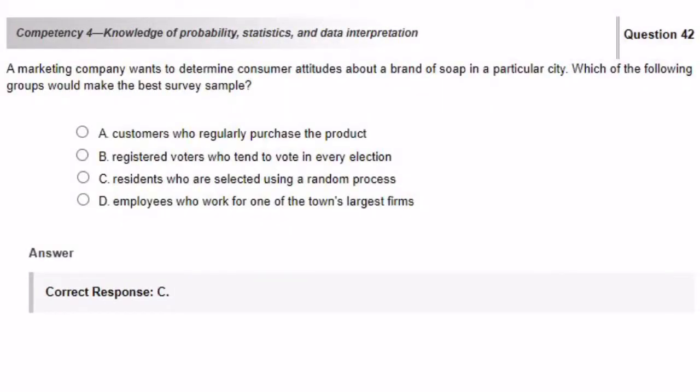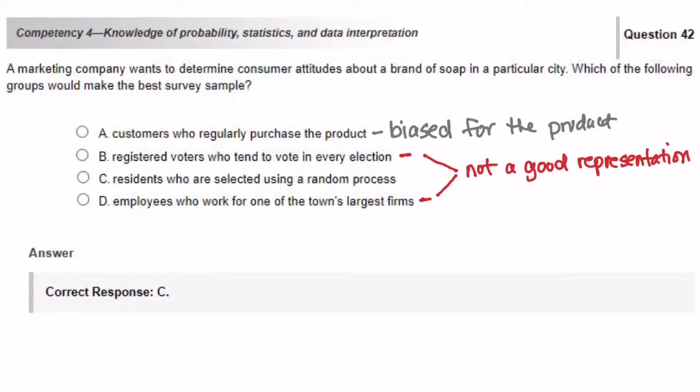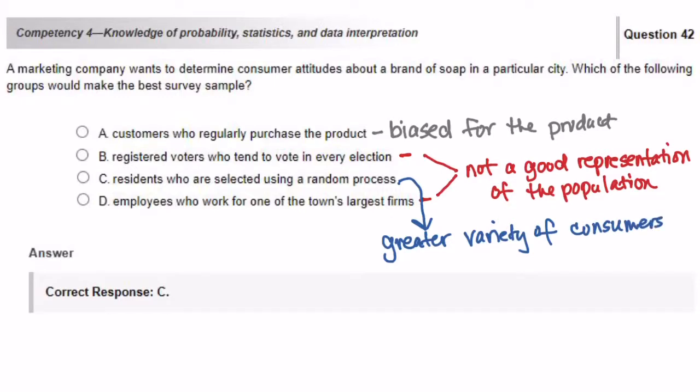A marketing company wants to determine consumer attitudes about a brand of soap in a particular city. Which of the following groups would make the best survey sample? For answer choice A, customers who purchase the product on a regular basis would be biased for the product so they would not make a very good sample for the survey. Answer choice B says registered voters who tend to vote in every election. And answer choice D, employees who work for one of the town's largest firms. Neither of these answer choices would be a good representation of the population. Answer choice C, residents who are selected using a random process would be the group that would make the best survey sample because it's a great variety of consumers.